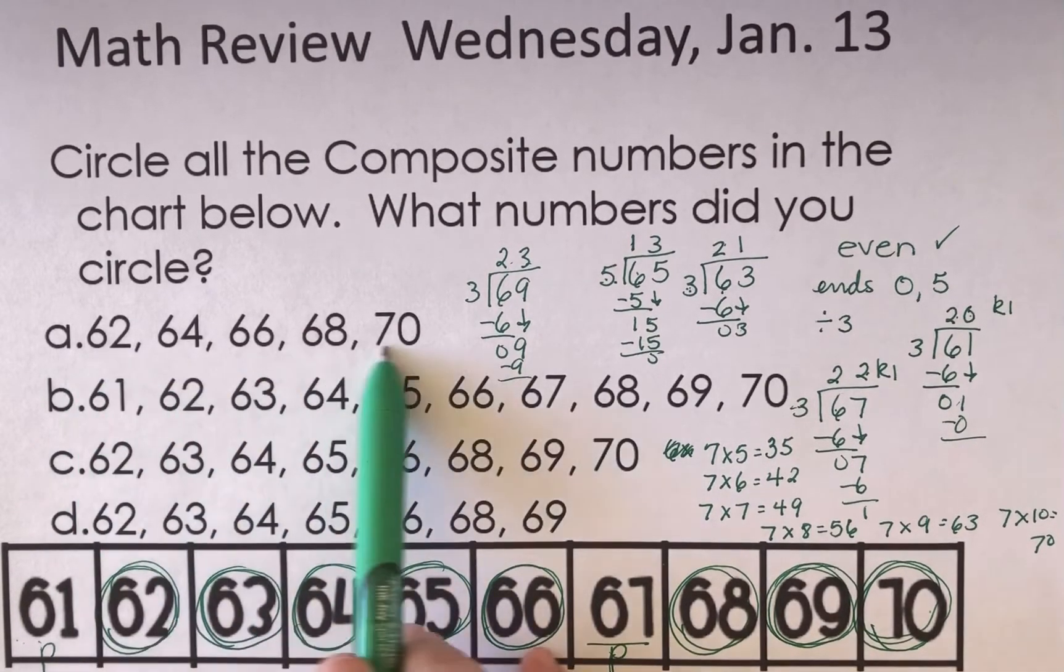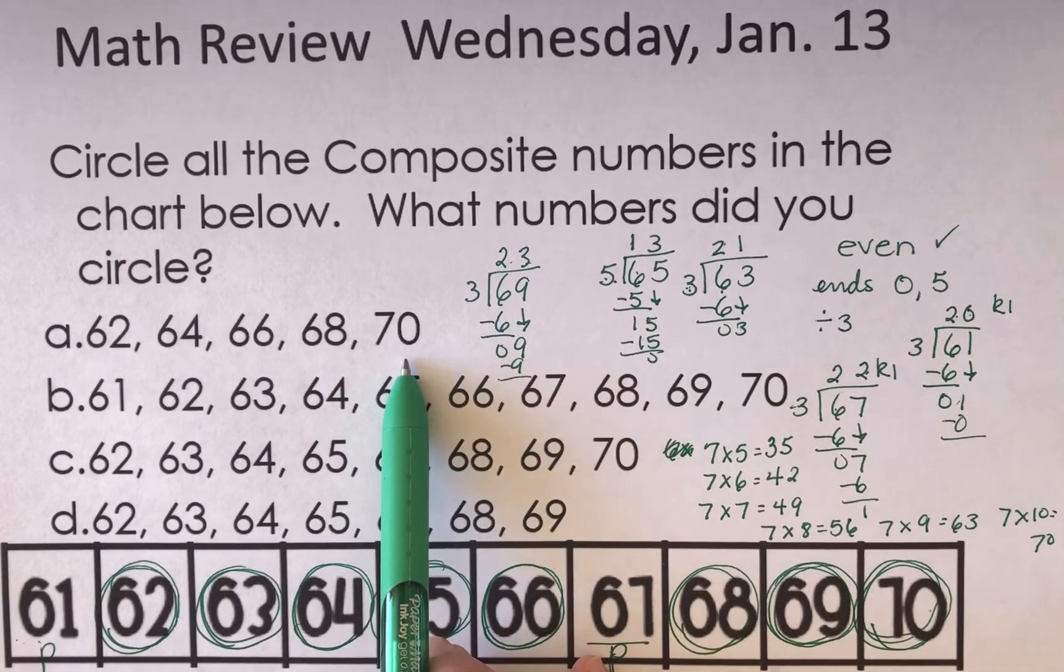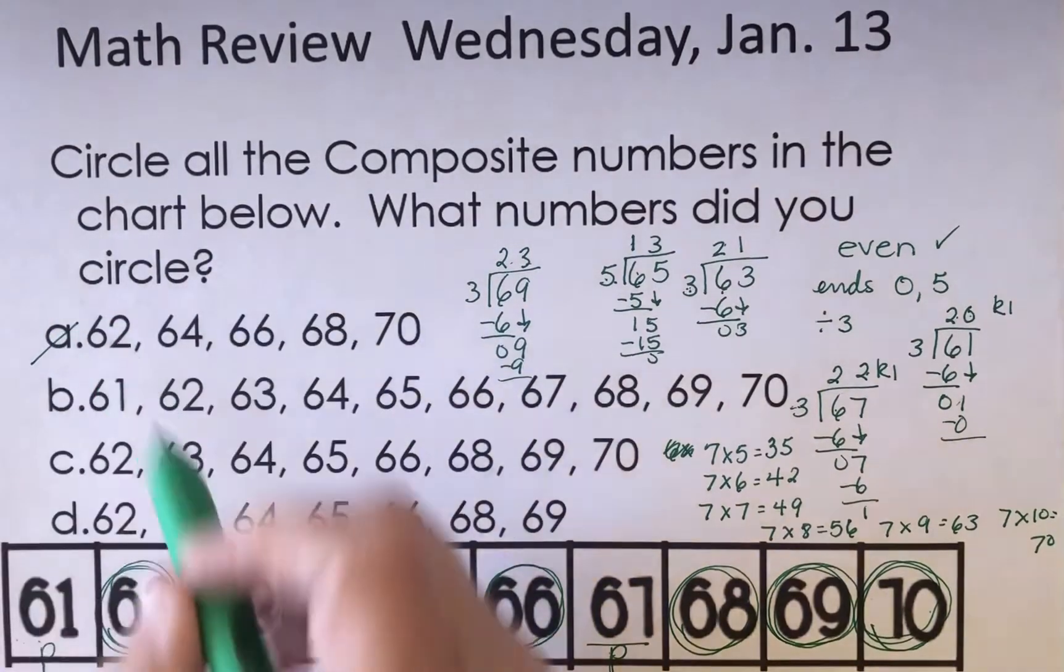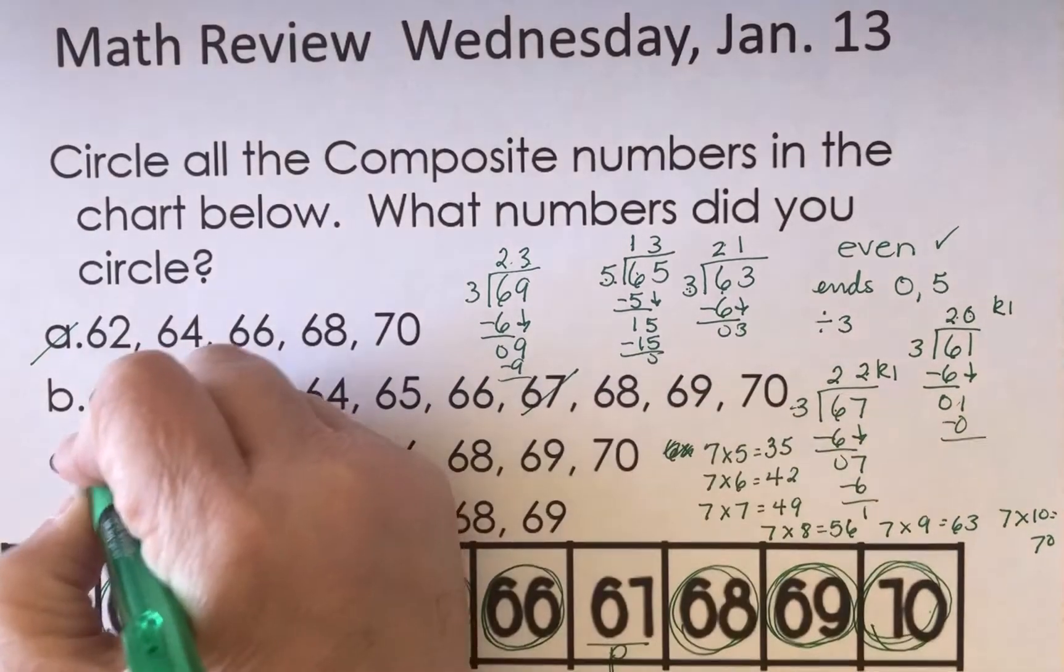In answer A, yes, these are all composite numbers, but they aren't all of the composite numbers. In B, these are all the numbers listed, but I know that this one and this one are prime.